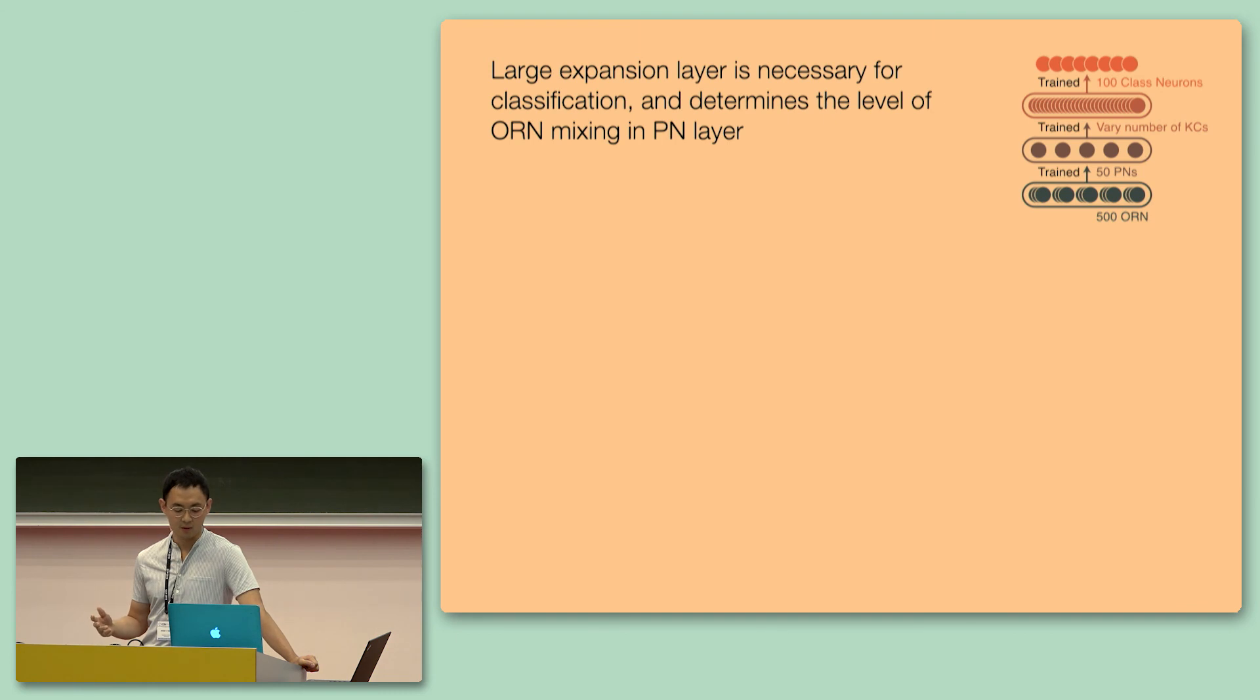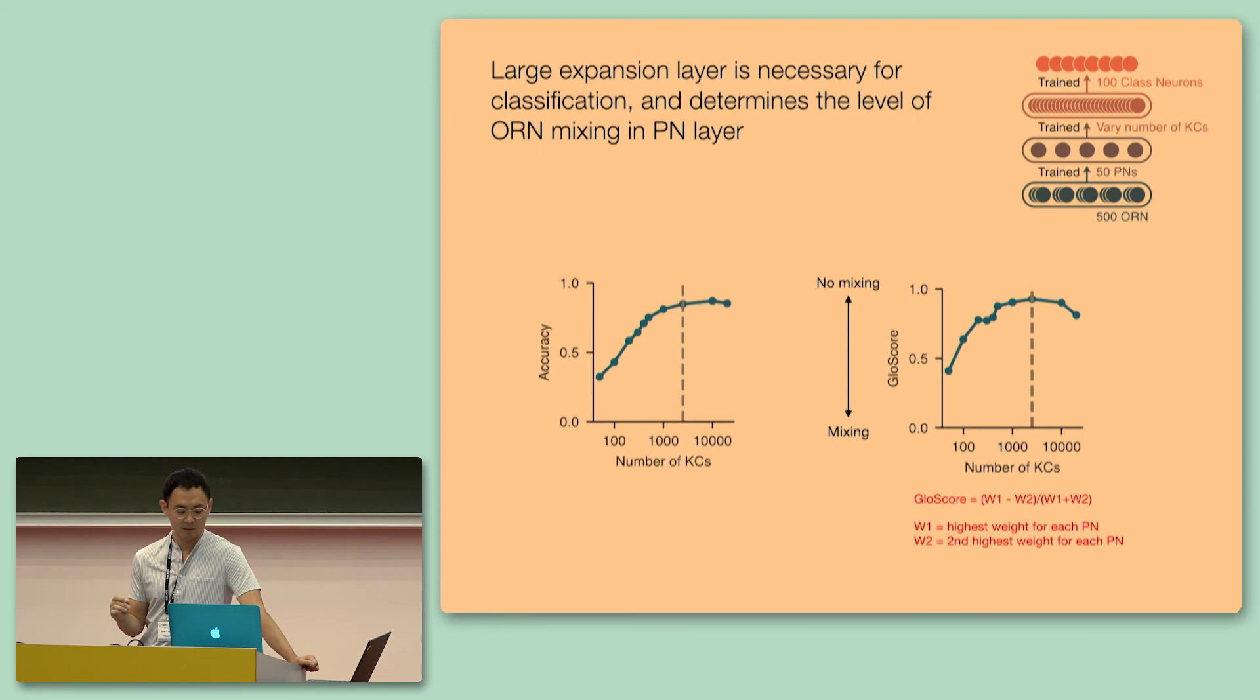We test this by training a feedforward network model, except we vary the number of Kenyon cells that are present, and we find that as the number of Kenyon cells decreases from what we observe in biology, the accuracy of classification in this task also decreases as well. And moreover, we observe that as we decrease the number of Kenyon cells, the level of mixing of ORN inputs in the PN layer also increases as well. We use the very simple metric called Glow Score or Glomerular Score to quantify the degree of mixing. A high Glow Score of 1 means that there is no mixing of ORN inputs, and a low Glow Score means that there is a lot of mixing. And you see that as we decrease the number of Kenyon cells to something like 100, there is starting to be a lot of mixing.